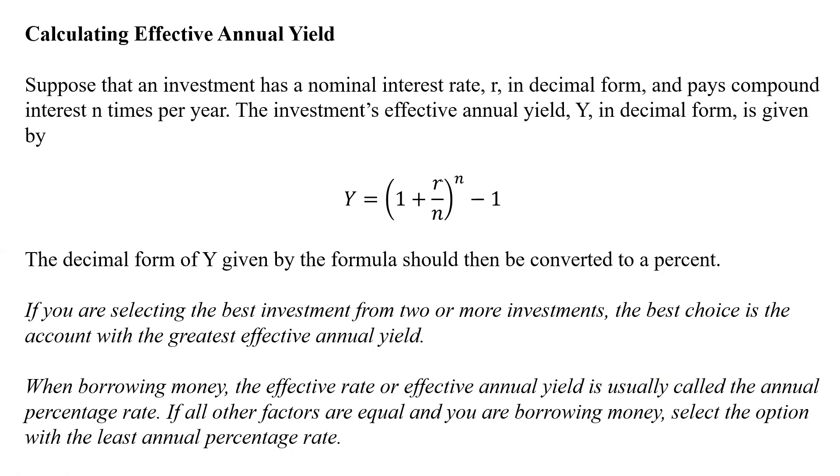Whichever the higher one is, that's going to be the one you want to use. And when borrowing money, the effective rate or effective annual yield is usually called the annual percentage rate. If all other factors are equal and you're borrowing money, select the option with the least annual percentage rate because that's going to give you the least amount you have to pay back. When you want to get interest that they're going to pay you, you want the highest. When you pay them, you want the lowest. It's the inverse of each other.